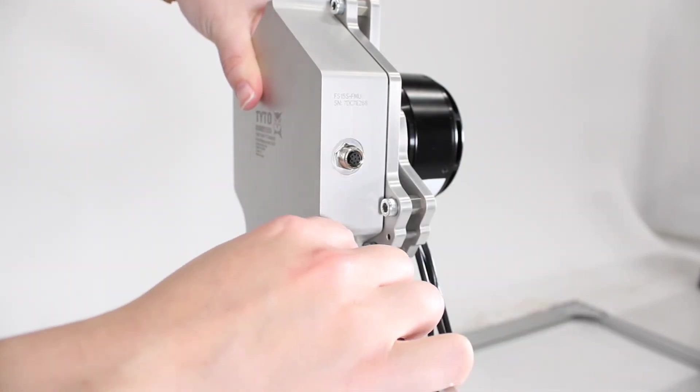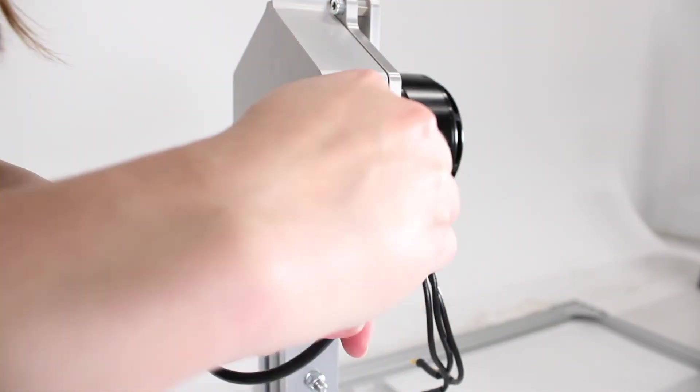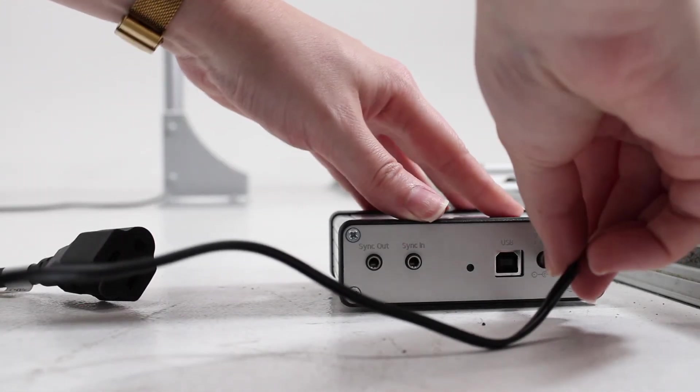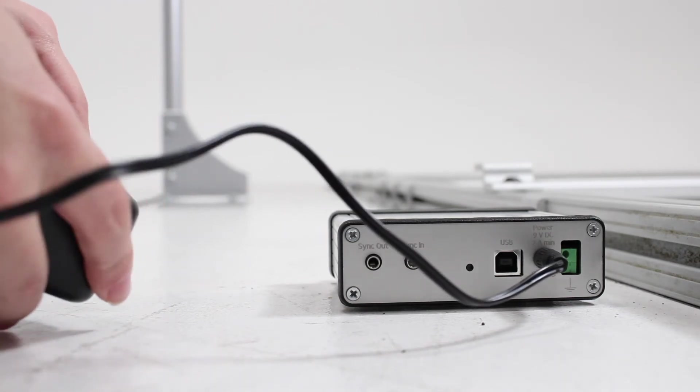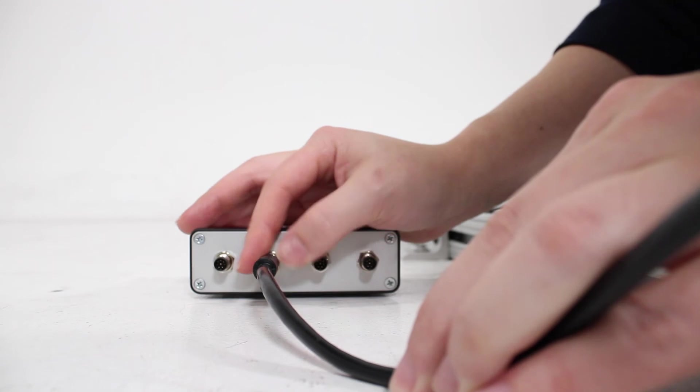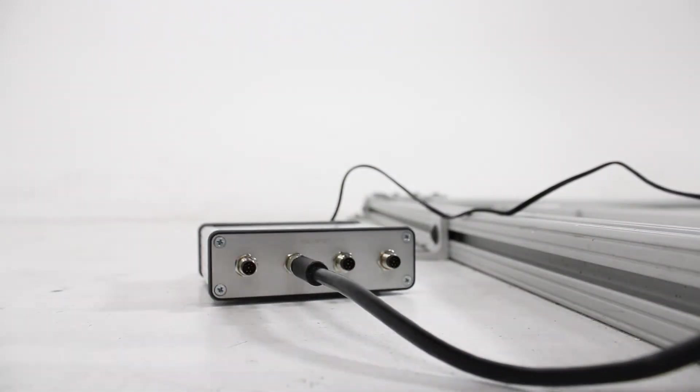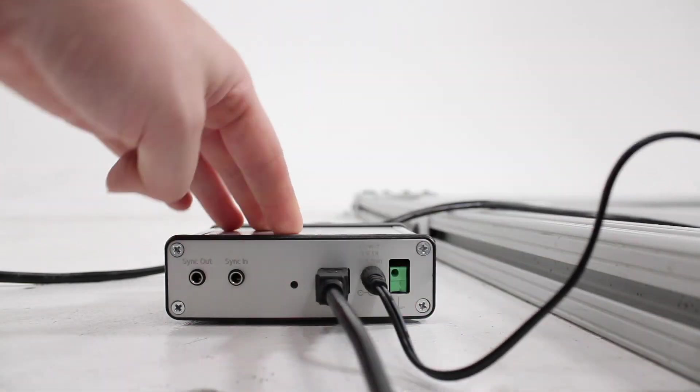We can now start assembling our electrical components. We'll start by plugging in our FMU, then we can get out our sync hub. Place the sync hub in a secure place between the test stand and your computer, plug in the 9 volt 2 amp power adapter to power it, and at the same time on the other side we can plug in the FMU and EMU cables as well as the USB cable which will connect to your computer.